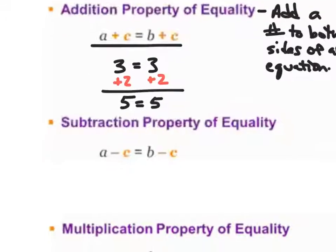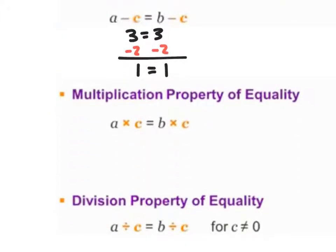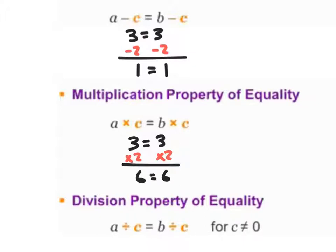The same thing works for subtraction. Let's say I have 3 equals 3. If I subtract 2 from each side, I get 3 minus 2 is 1, equal to 3 minus 2 is 1 — still a true statement. Same thing with the multiplication property of equality. If I multiply both sides by 2, I get 6 is equal to 6 — still a true statement.